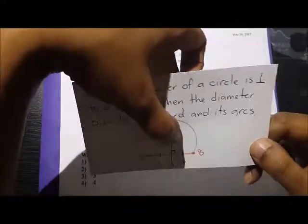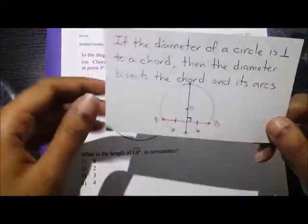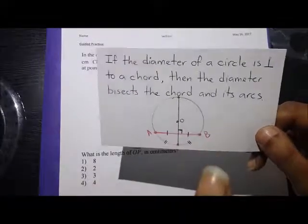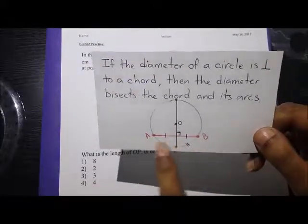And it doesn't just have to be the diameter, it could also be the radius. But pretty much anything that's bisecting and is perpendicular to the chord has these properties.